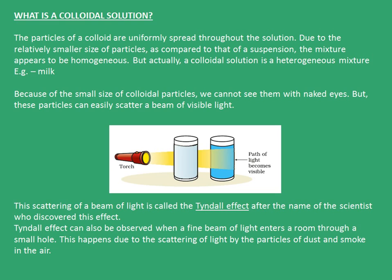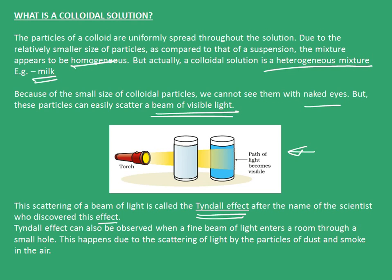The third type of mixture is the colloidal solution. The particles of a colloid are uniformly spread throughout the solution. Due to the relatively smaller size of particles compared to that of a suspension, the mixture appears to be homogeneous, but in reality a colloidal solution is a heterogeneous mixture — for example, milk. Because of the small size of colloidal particles, we cannot see them with naked eyes. But these particles can easily scatter a beam of visible light, as shown in this picture. The scattering of a beam of light is called the Tyndall effect, after the scientist who discovered it. The Tyndall effect can also be observed when a fine beam of light enters a room through a small hole, due to scattering of light by particles of dust and smoke in the air.